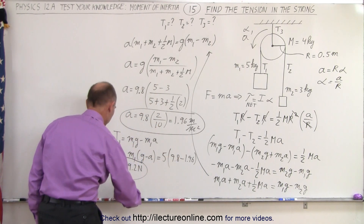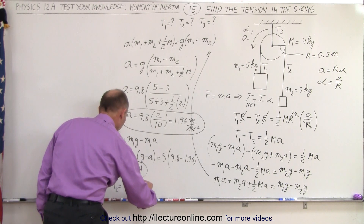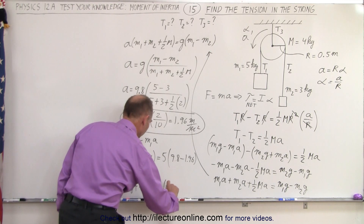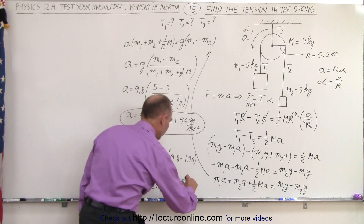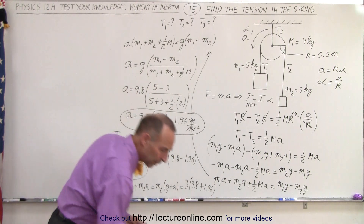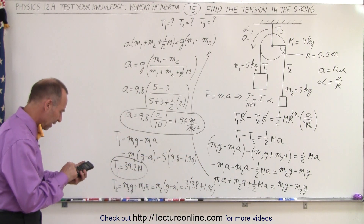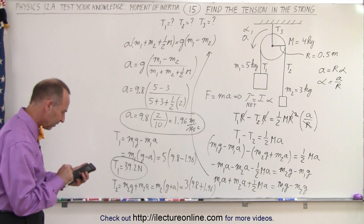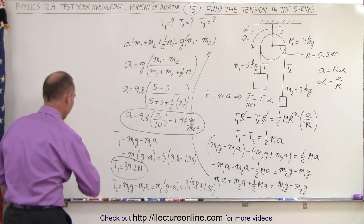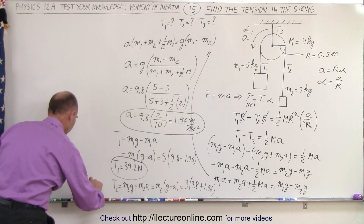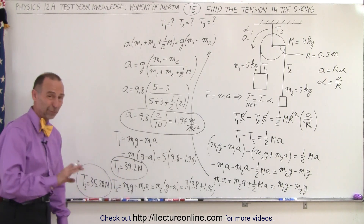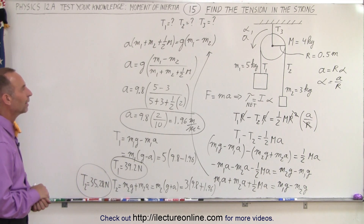T2 is equal to m2·g + m2·a, which is m2 times (g + a), equal to 3 × (9.8 + 1.96). Calculating: 9.8 plus 1.96, multiplied by 3 equals 35.28 Newtons. So T2 is 35.28 Newtons. I kept an extra significant figure to avoid rounding errors.